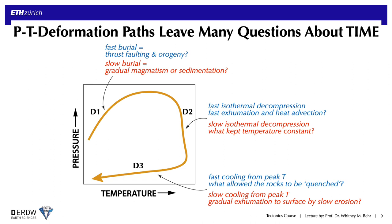Without knowledge of the timescales of these PT events, the tectonic process we might infer is very non-unique. For example, if D1 occurred very quickly we might infer it represents thrust faulting and orogeny, whereas if it were slow, perhaps it was gradual burial during magmatism or sedimentation. If D2 was fast, it might reflect very fast exhumation and advection of heat; whereas if slow, we'd need to figure out what kept temperatures constant — was there some nearby heat source? Similarly for D3, a short duration might suggest a faulting event that quenched the rocks as they reached the surface, whereas a slow event might indicate gradual exhumation by slow erosion of the overburden. So an additional puzzle piece we need in unraveling tectonic histories is, of course, geochronology.